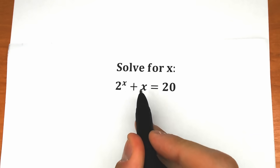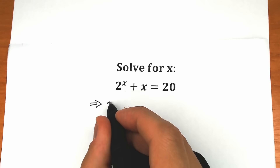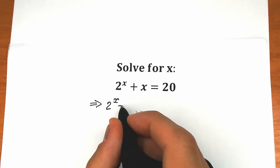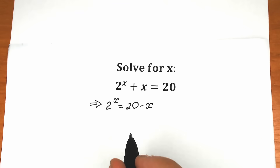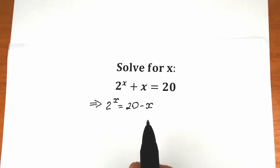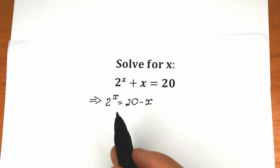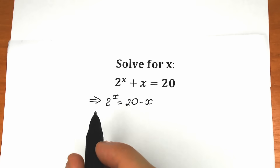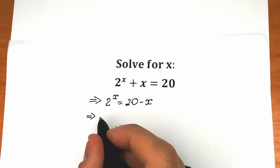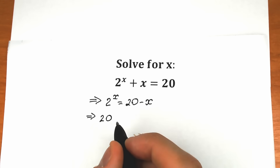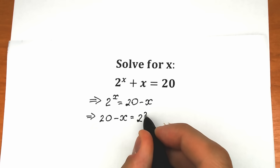First of all, let's bring this x from our left side to the right side. What do we have right here? We have 2 to the power x equal to 20 minus x. This is our first step. We're just bringing this x from the left side to the right side. Now let's change position — it will be more understandable. Let's bring 20 minus x to the left side and 2 to the power x to the right side. So 20 minus x equal to 2 to the power x.